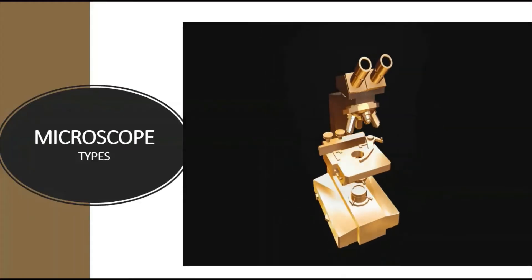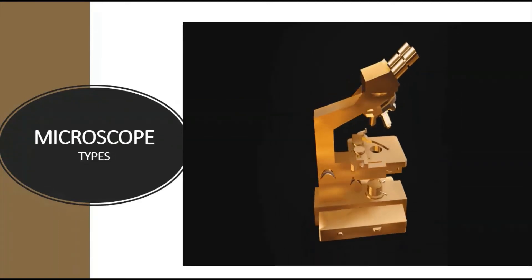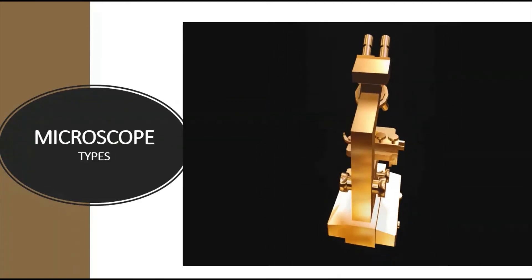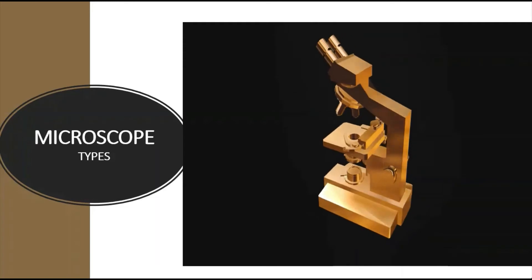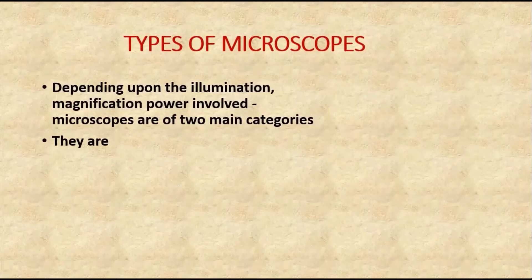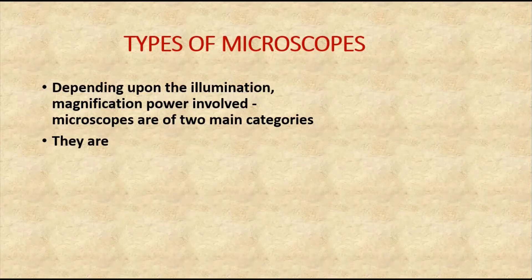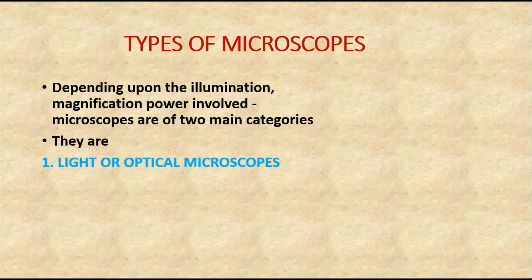Hi everyone, now we are going to learn about the types of microscopes. The microscopes are going to be categorized into two main categories depending upon the illumination, that is the source of light, and the second one is the principle involved for the magnification of objects by the microscope. So mainly depending upon illumination and magnification power, the microscopes are categorized into two main categories.